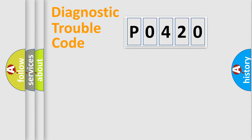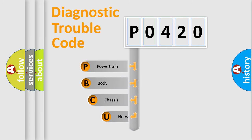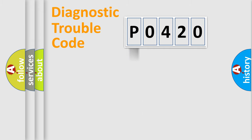Let's do this. First, let's look at the history of diagnostic fault code composition according to the OBD2 protocol, which is unified for all automakers since 2000. We divide the electric system of automobile into four basic units: Powertrain, Body, Chassis, and Network.